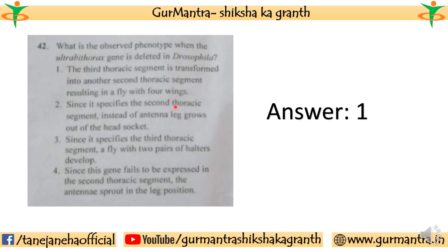Question 42 is about Drosophila — an important one. What is the observed phenotype when the ultrabithorax gene is deleted in Drosophila? Four statements are given, and the correct answer is the first one: the third thorax segment is transformed into another second thorax segment, resulting in a fly with four wings.